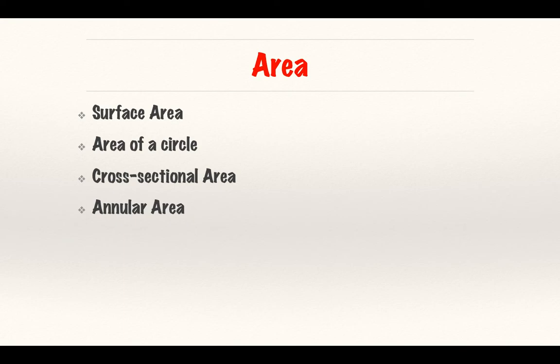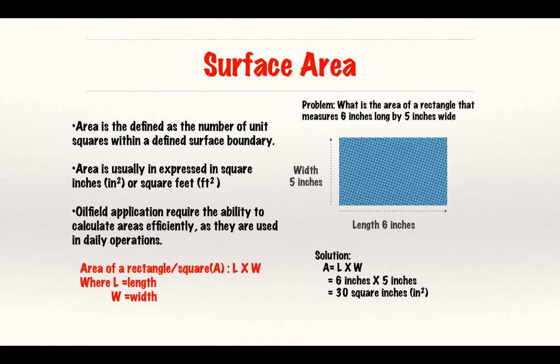On area, we're going to discuss surface area, area of a circle, cross-sectional area, and annular area. Surface area is defined as the number of unit squares within a defined surface boundary—basically, how many squares do I have within this boundary.